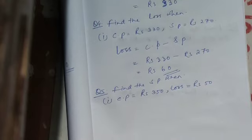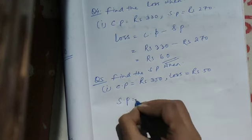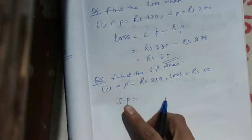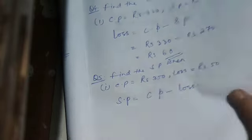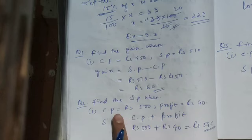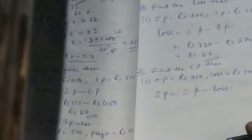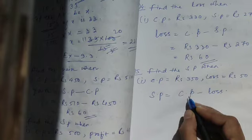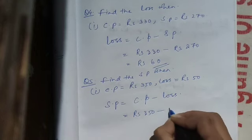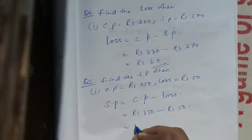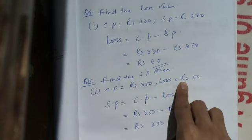Now find SP when there is a loss. When there is profit, we add profit to CP. But when there is loss, we subtract the loss from CP. So SP equals CP minus loss. Here CP is rupees 350 and loss is rupees 50. So 350 minus 50 is rupees 300, which is our SP. That means SP was less than CP — that is why it was a loss.